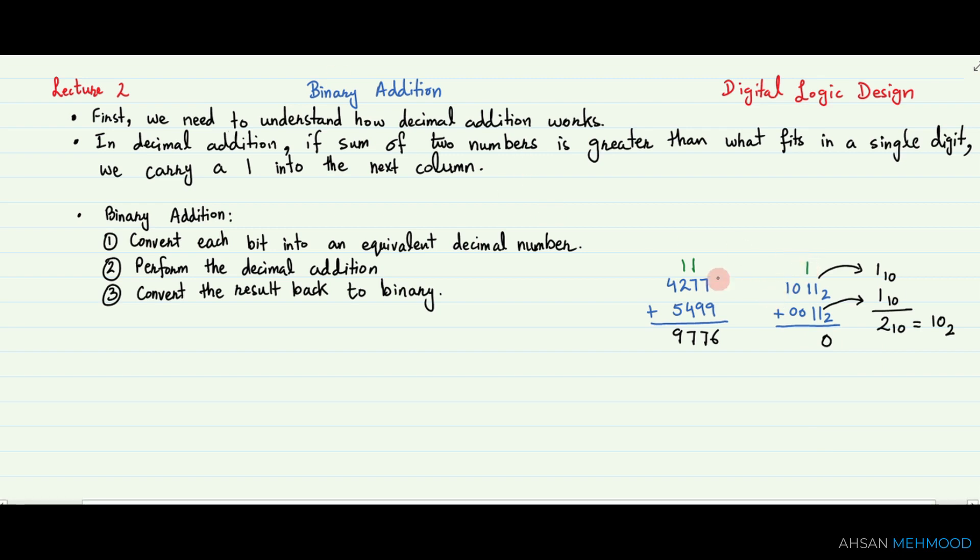In the second column, the sum is 1 plus 1 plus 1 equals 3 base 10, which is equal to 11 base 2. Again, we put the 1 in this column and carry the 1 to the next column.